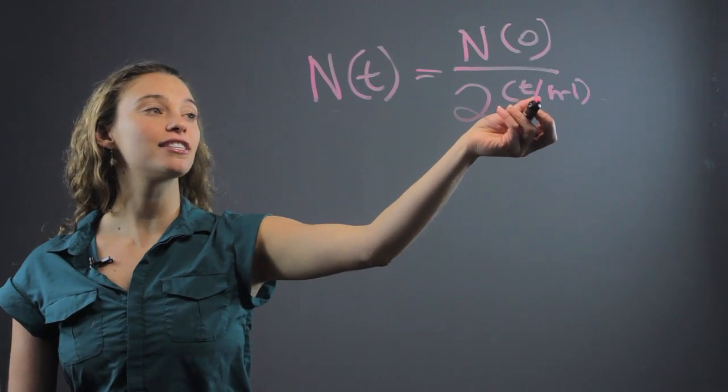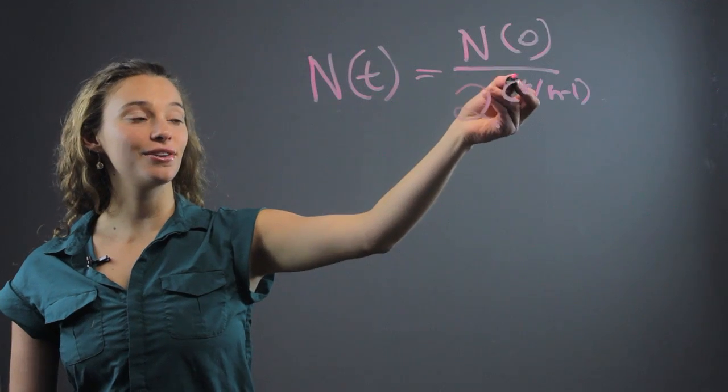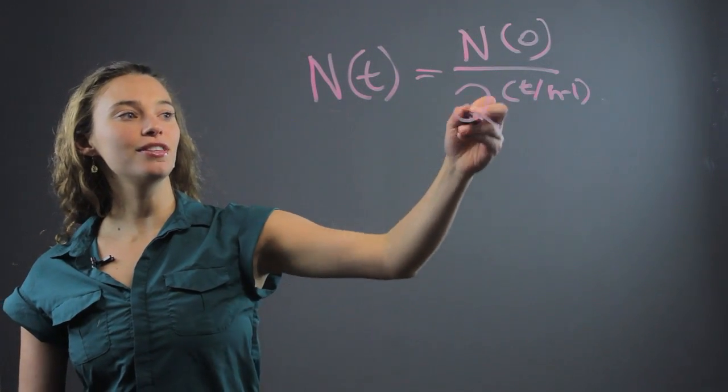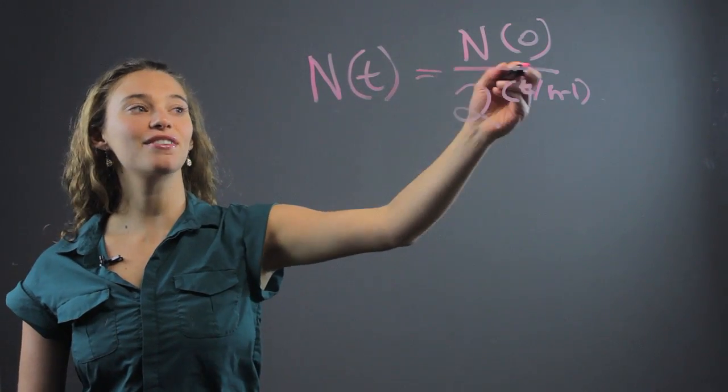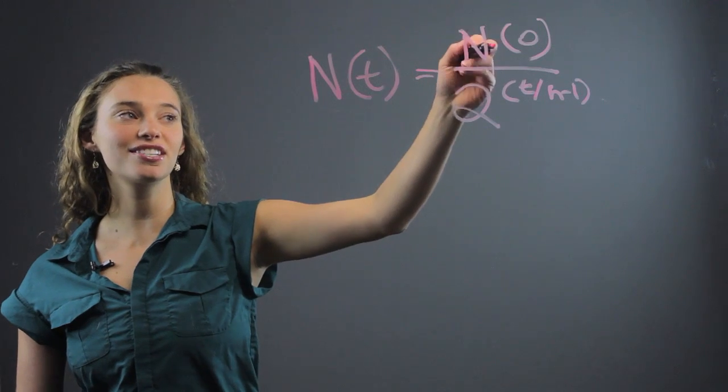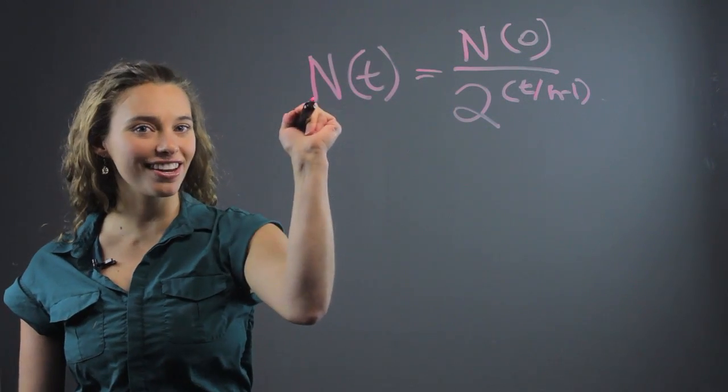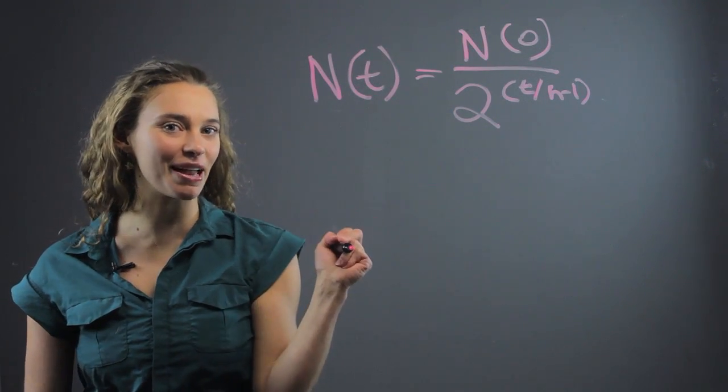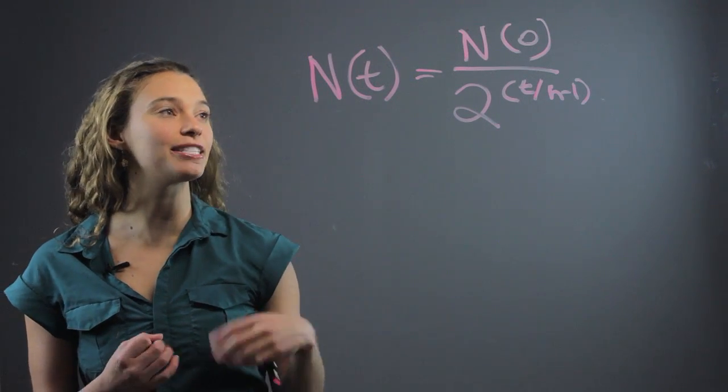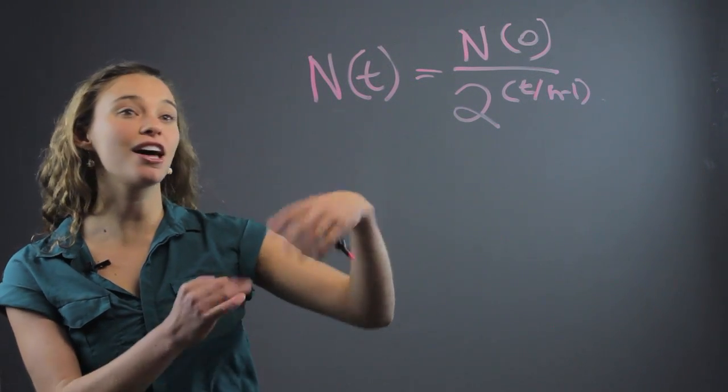So whatever the half-life of the substance is, we divide that into the time to that power, and divide that all into the original amount of the substance, and that will give us the final amount of the substance that is remaining. So let's look at a simple way to plug in these numbers.